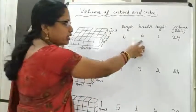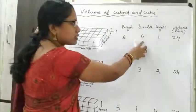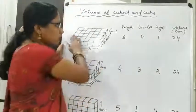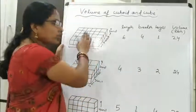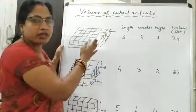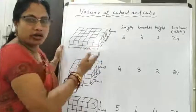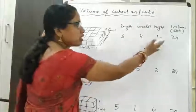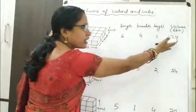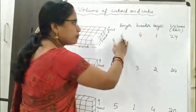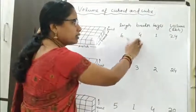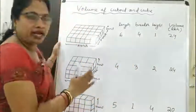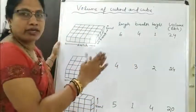So length is 6 units, breadth is 4 units, and height is 1 unit. The 24 unit cubes have a volume of 24 cubic units. This means 24 can be obtained by multiplying length into breadth into height, that is 6 × 4 × 1.